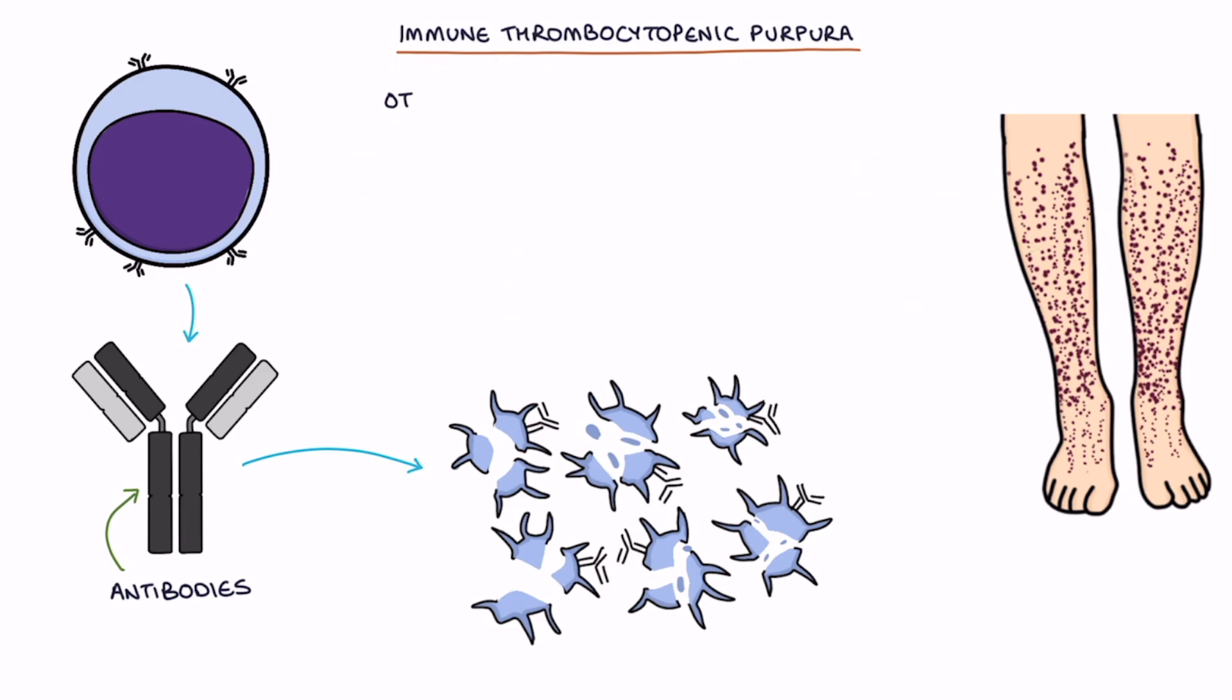Other names for the same condition include autoimmune thrombocytopenic purpura, idiopathic thrombocytopenic purpura, and primary thrombocytopenic purpura.